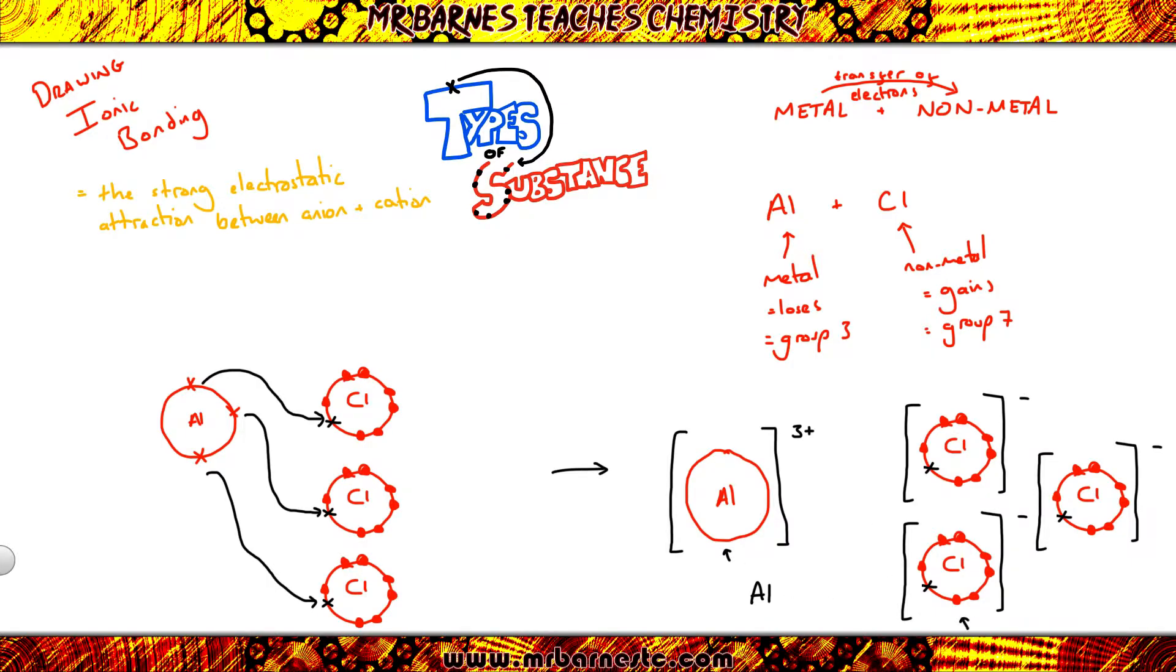Now as we can see here, I've got one aluminium, I've got three chlorines, so I know my formula is AlCl3. I've gone through that quite quickly. If you're not sure, if you want more examples, have a look at my video in the playlist in the top right hand side.